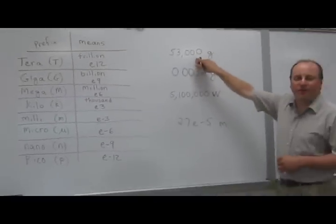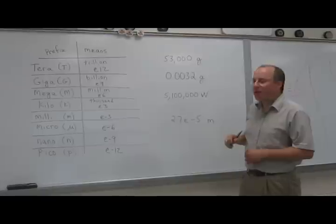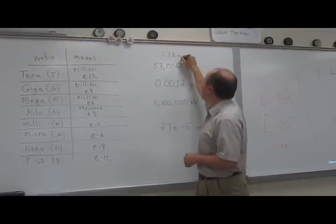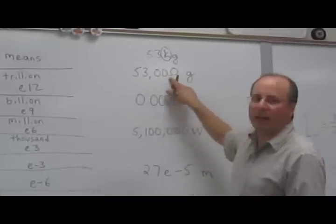So for instance, let's say we had 53,000 grams. We could rewrite that as 53 kilograms, where kilo takes the place of thousand.